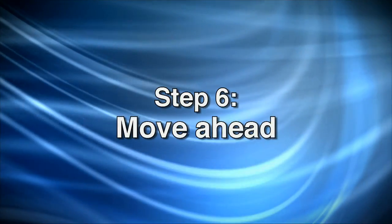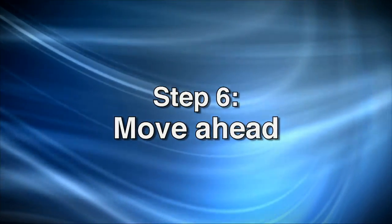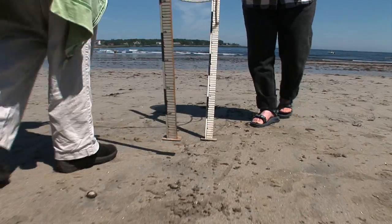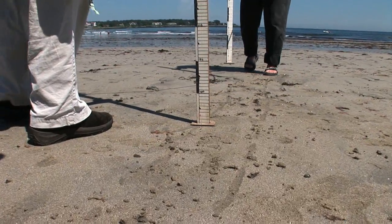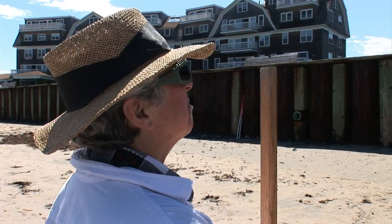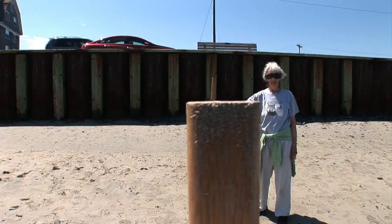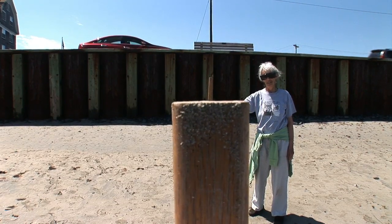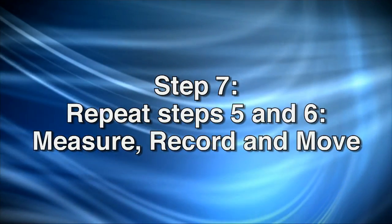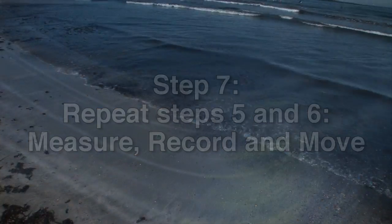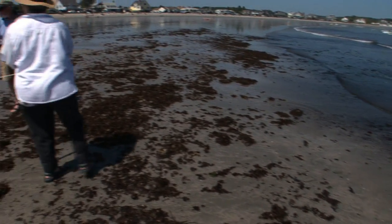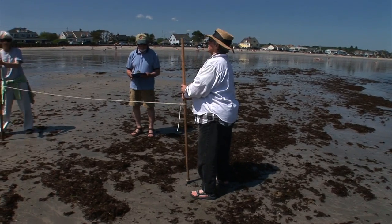Now for step six, move ahead. As person two waits, move pole one into the same footprint pole two occupied. Now pole two can be moved ahead and realigned with pole one, the starting point, and the vertical marker. For step seven, repeat steps five and six — measure, record, and move. Continue to move ahead, repeating these steps all the way to the water. This completes our beach profile line from the top of the dune to the water line.